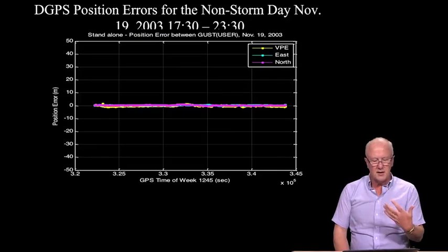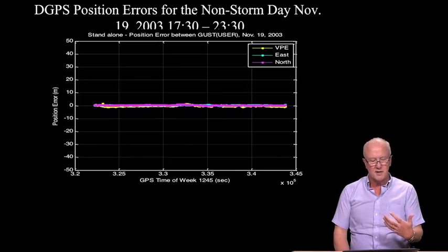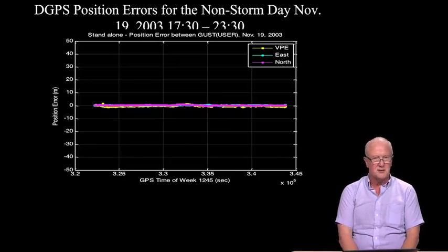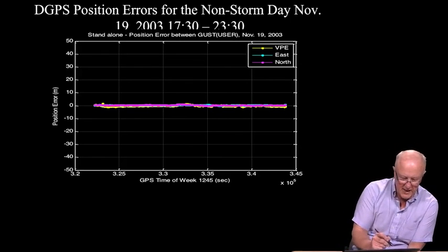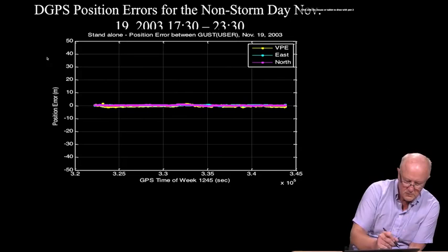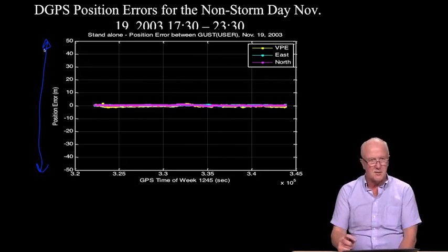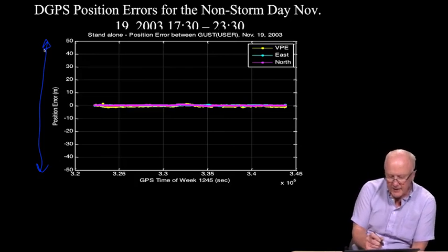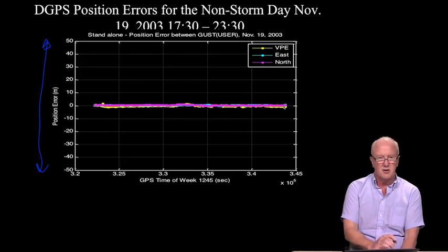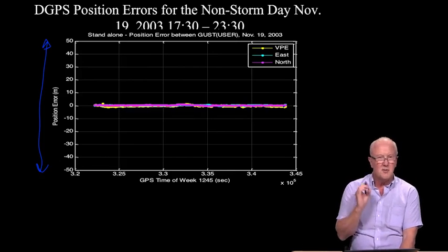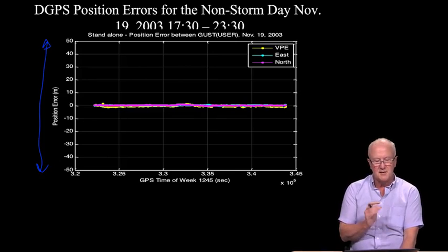If we look at the same day — a non-storm day — differential GPS works very nicely. Using the same scale of plus or minus 50 meters, the errors have now become almost straight lines, very close to zero meters — very much in line with our error budget that predicted errors would be one meter or smaller.